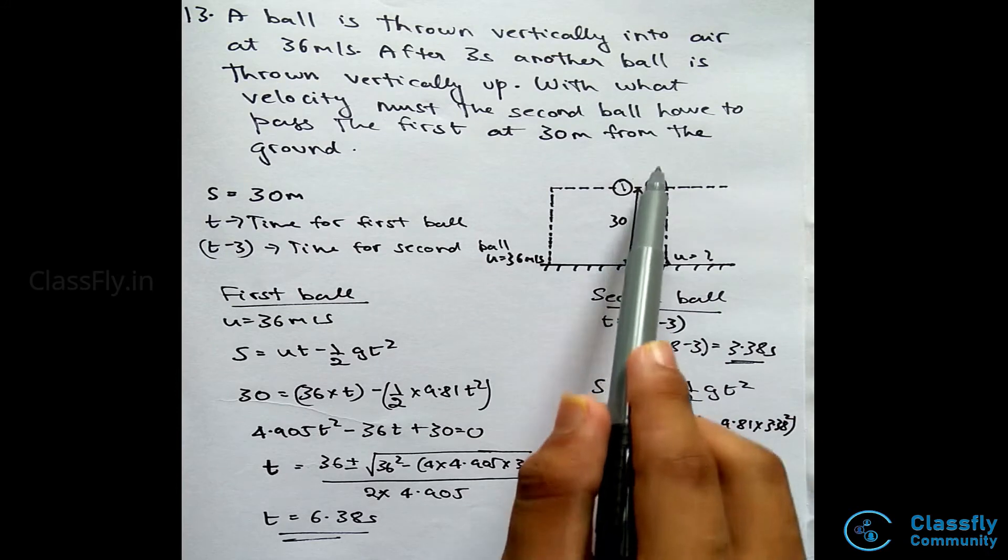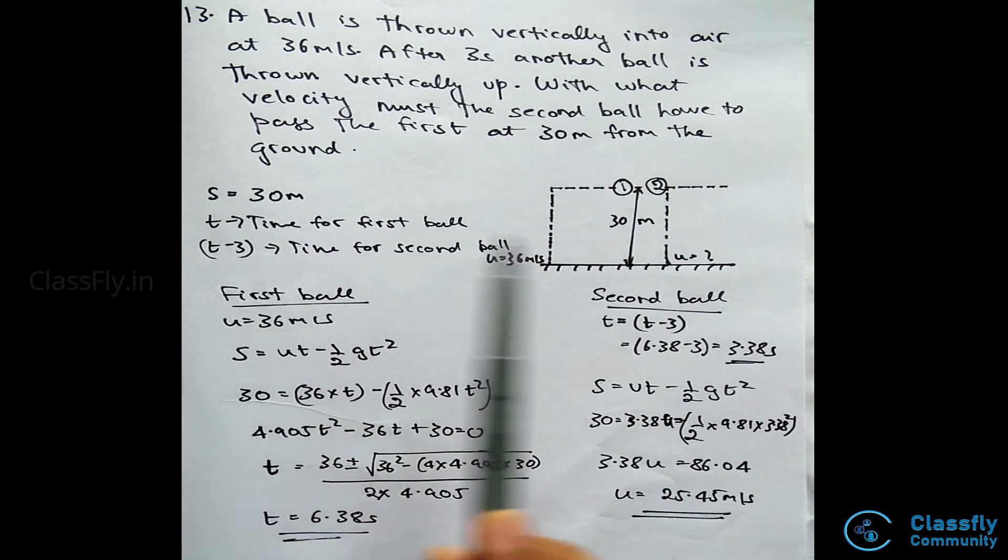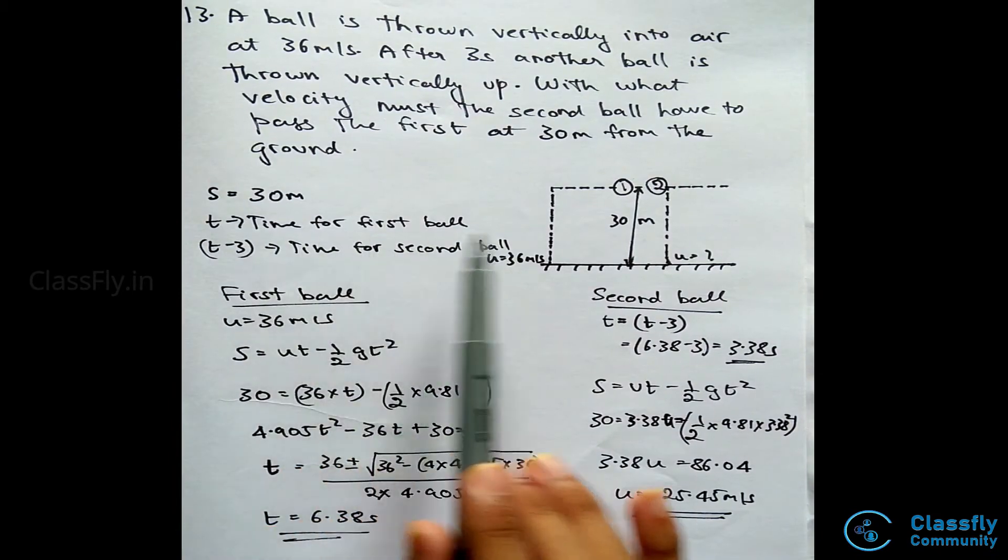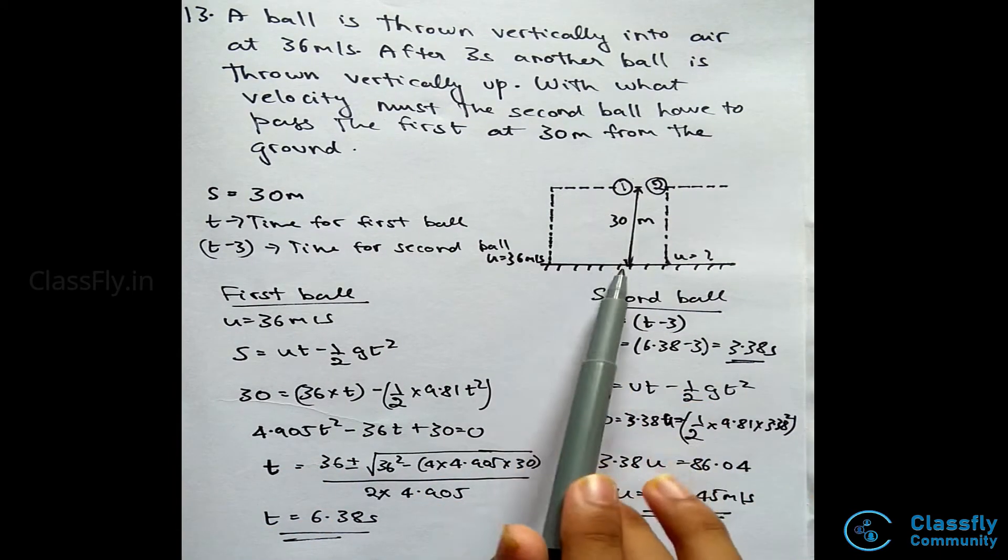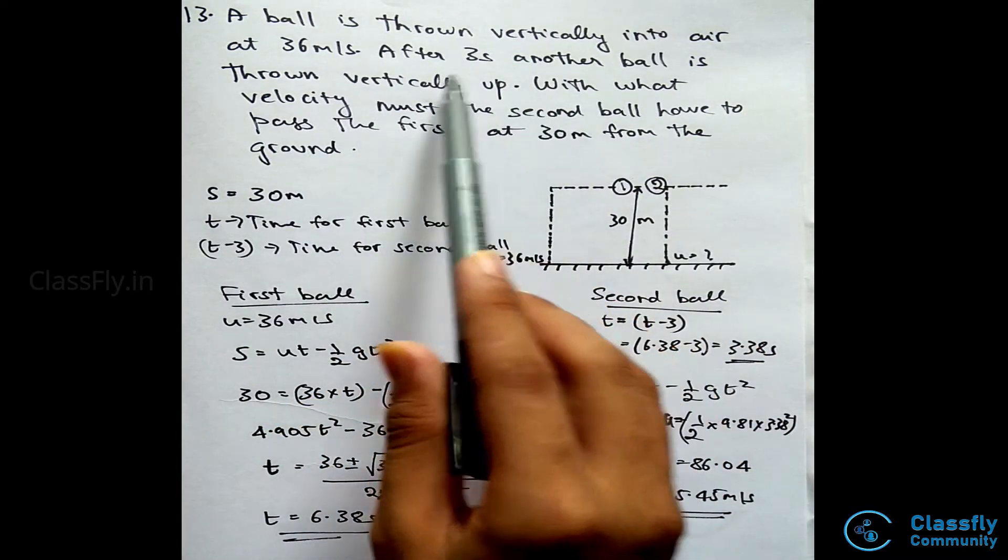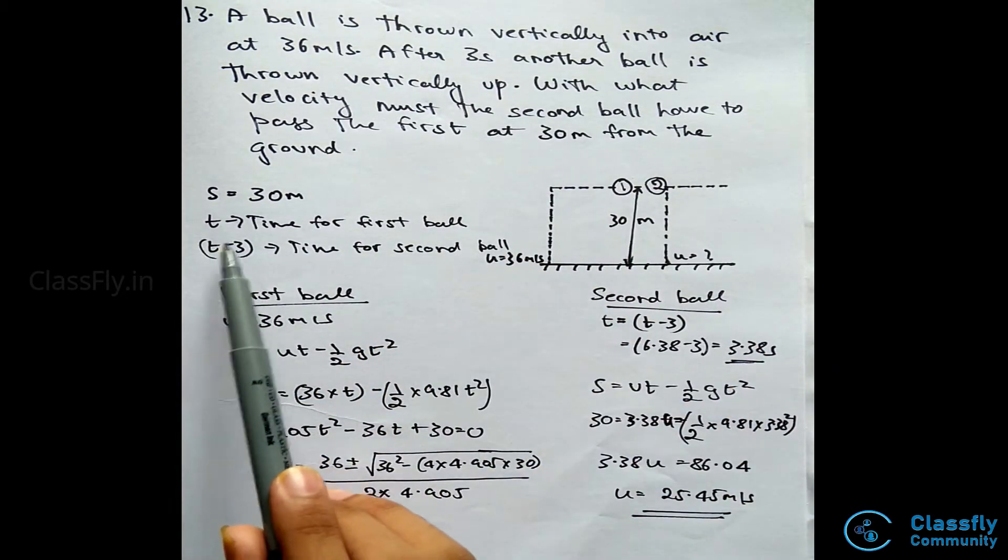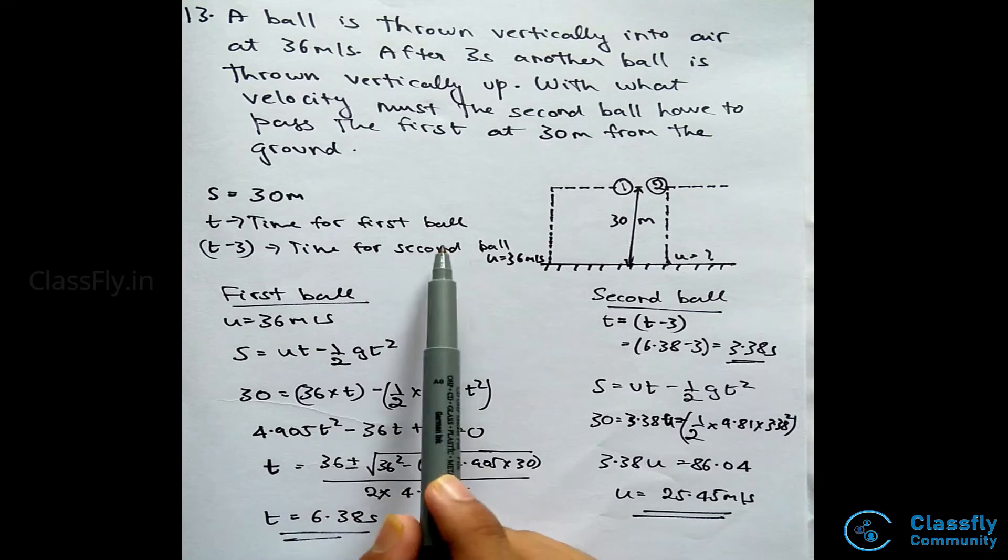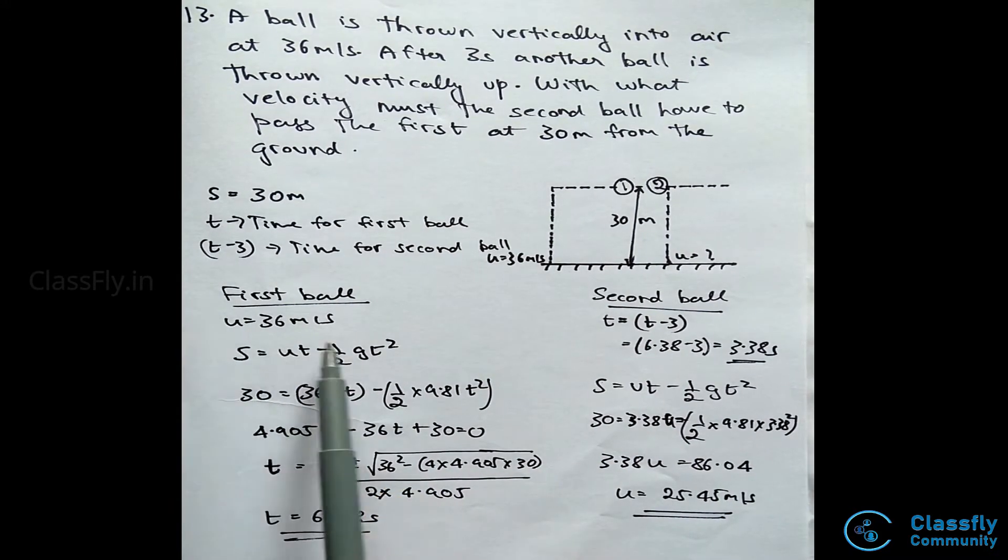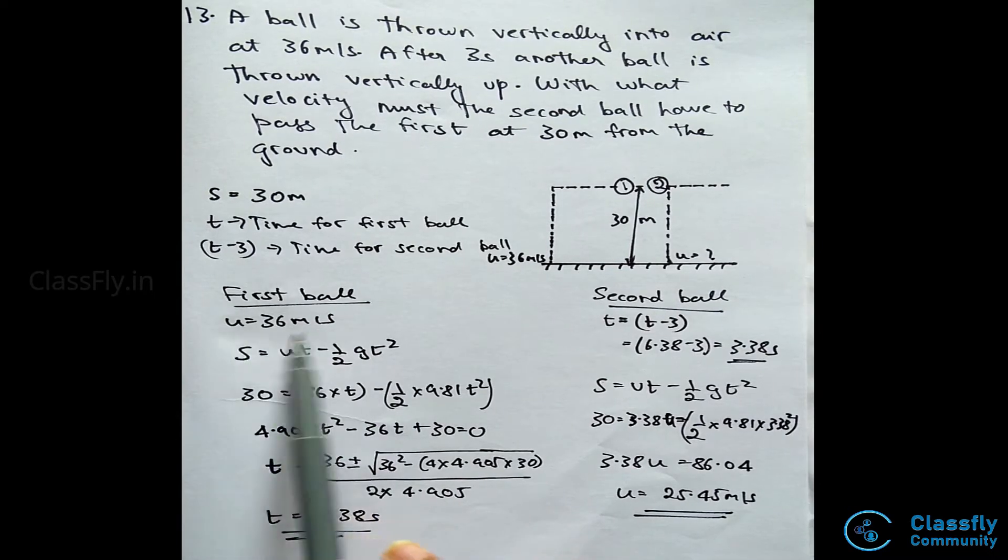They have asked us with what velocity must the second ball have to pass the first ball at 30 meters from the ground. Hence, the distance will be 30 meters, that is s. Let t be the time taken by the first ball to reach that distance. The second ball is thrown after three seconds the first ball is thrown, and hence t minus three will be the time for the second ball to reach the distance.